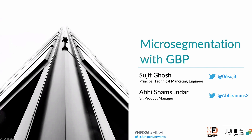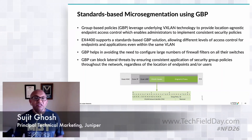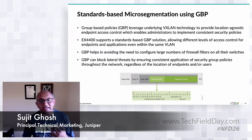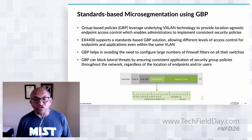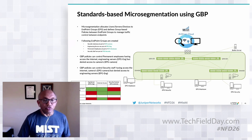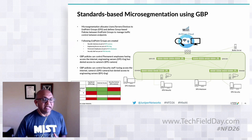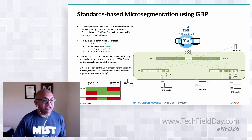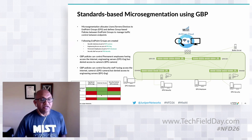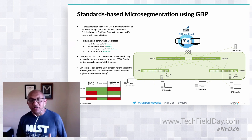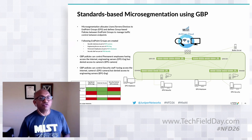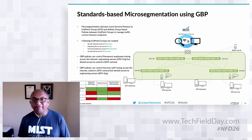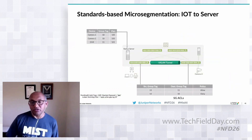We talked about standards-based micro-segmentation and what this brings. We take advantage of the VXLAN header to insert tagging so that we can identify devices and control what they can do. For example, a policy where permanent employees can access engineering servers but not security cameras, or security staff can access cameras and the internet but not engineering servers — we push those policies onto the switches to stop traffic.